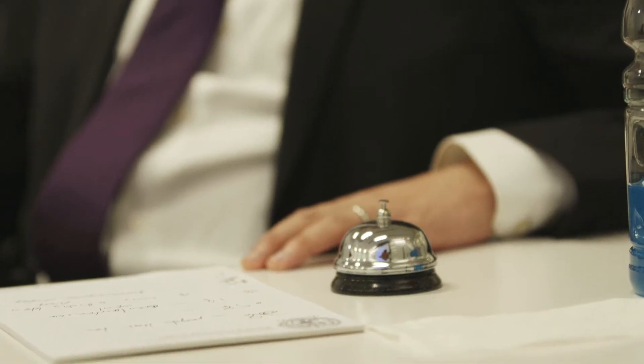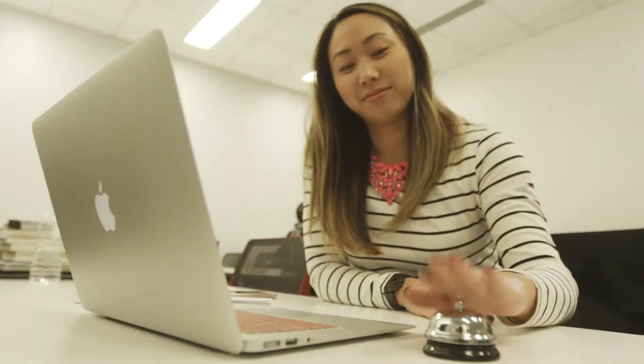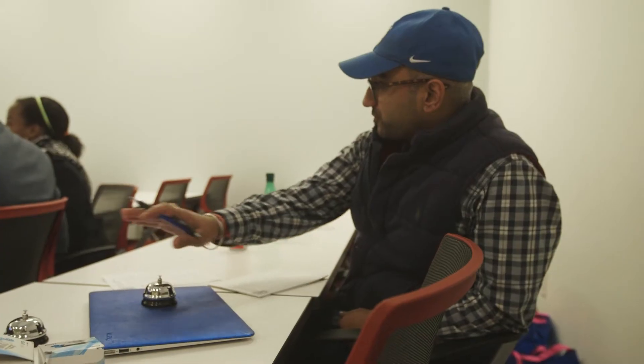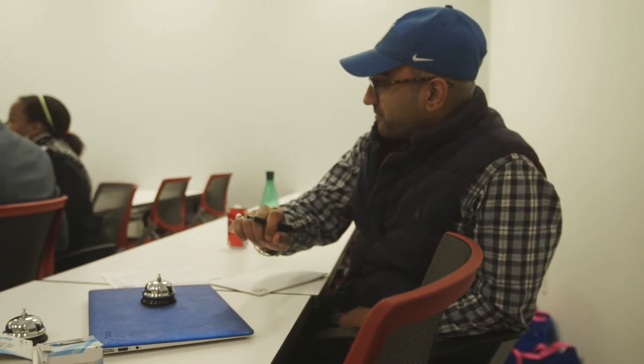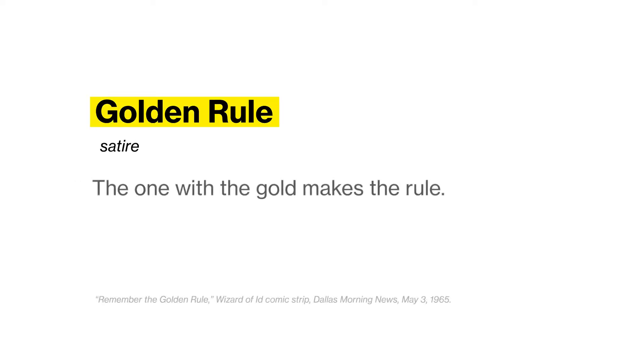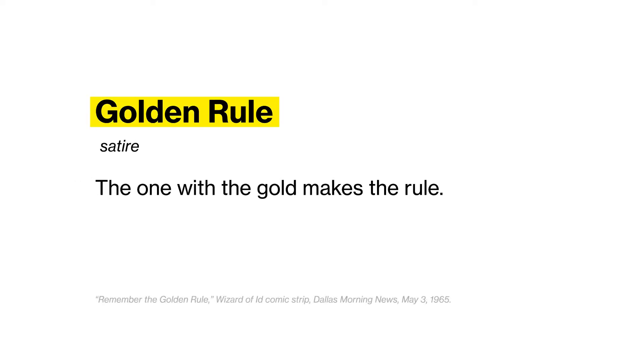Why don't developing countries develop? Because of the golden rule. The golden rule is that the one with the gold makes the rule. If you are a developing country and you need my money to develop, I'll make the rules of how you're going to develop.